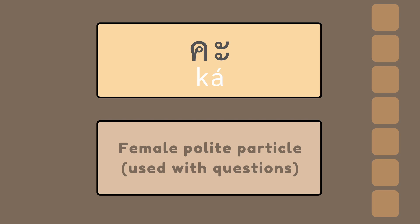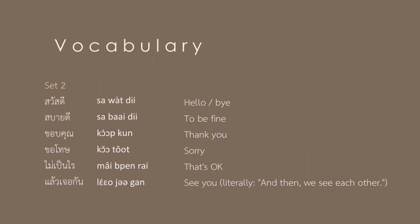Now, let's take a look at the next set of vocabulary. สวัสดี — Hello, bye. สบายดี — to be fine. ขอบคุณ — thank you. ขอโทษ — sorry. ไม่เป็นไร — that's okay. แล้วเจอกัน — see you; literally, 'and then we see each other.'